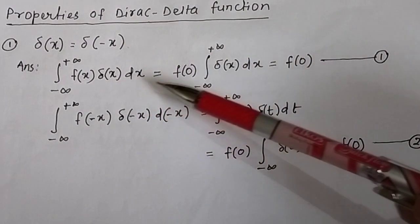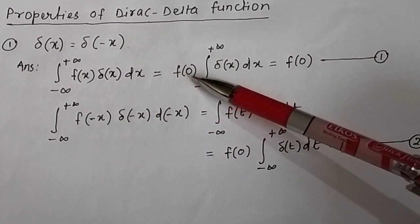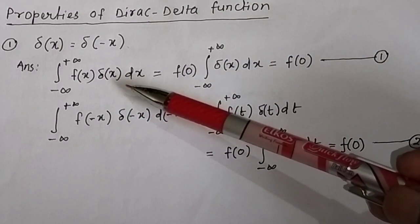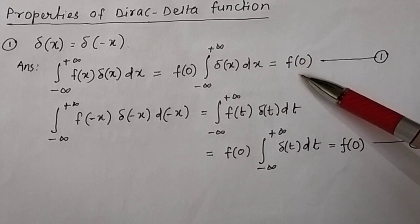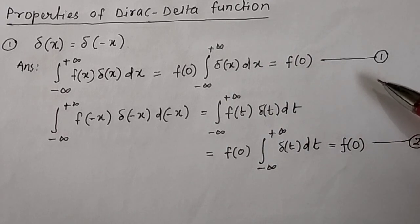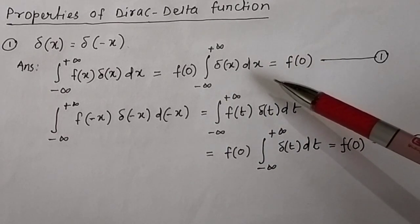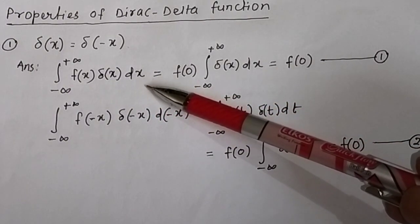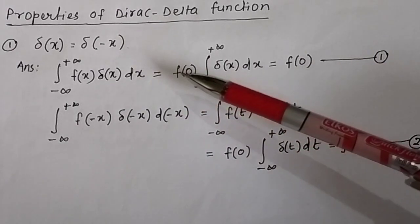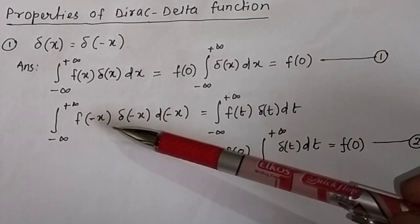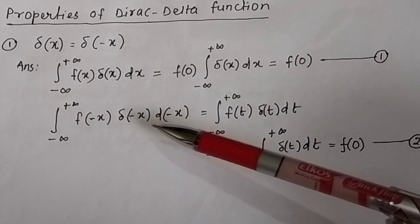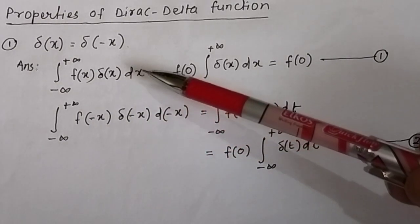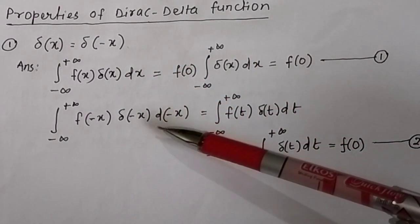So at x = 0, f(x) will be equal to f(0). This identity — the integral of f(x) δ(x) dx equals f(0) — is equation number 1. Now, if we can prove that for δ(-x) this identity is also valid, that means the integral of f(-x) δ(-x) d(-x) equals f(0), then we can prove that δ(x) = δ(-x).